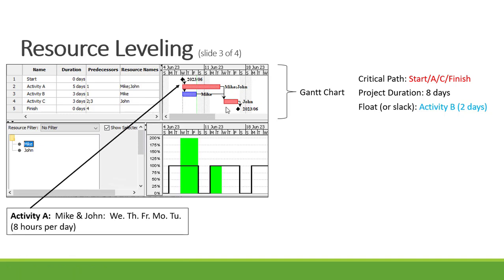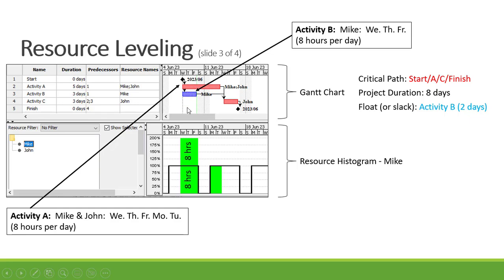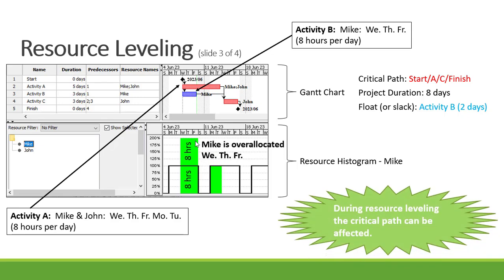For activity A we've assigned Mike and John, who both will be working Wednesday, Thursday, Friday, Monday and Tuesday on activity A, with an eight hour working day. For activity B we've assigned Mike working Wednesday, Thursday and Friday. From our resource histogram we can see that Mike is over allocated for Wednesday, Thursday and Friday because he's working on two activities — working 16 hours per day — however we've got an eight hour working day, and we need to level out the resource.